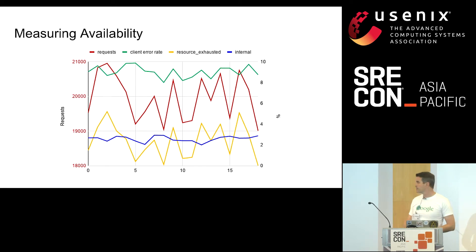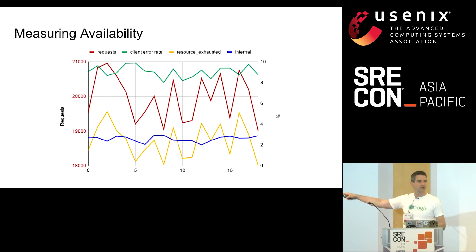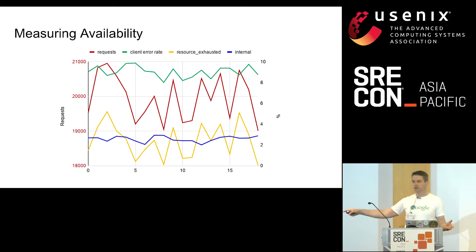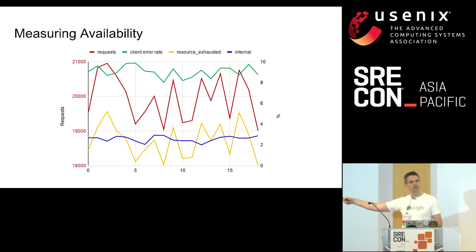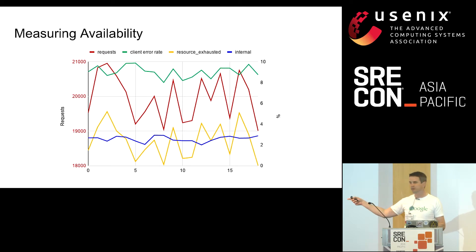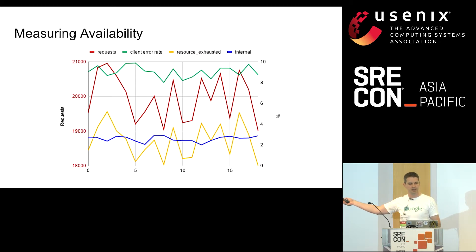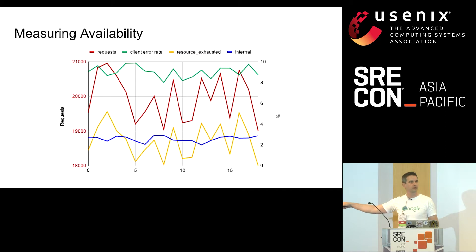Once we have this kind of breakdown, we can do partial sums. All client errors together — about 10%. That's a lot of errors, but they're not my problem — not an availability SLO problem. We have some internal errors at around 3%, and that's maybe some kind of problem. But what's really interesting is if we look at just the resource-exhausted errors — that tracks our request shape. Around 19,000-20,000 requests per second, maybe that's where we're hitting our limits and maybe we have a scaling problem. Suddenly we have information from this data. That signal would have been lost in the noise floor if we'd just added all errors into one counter.